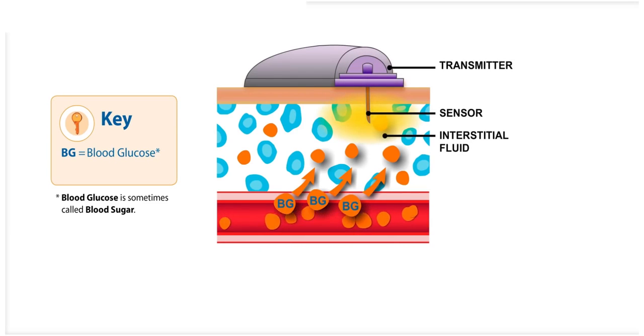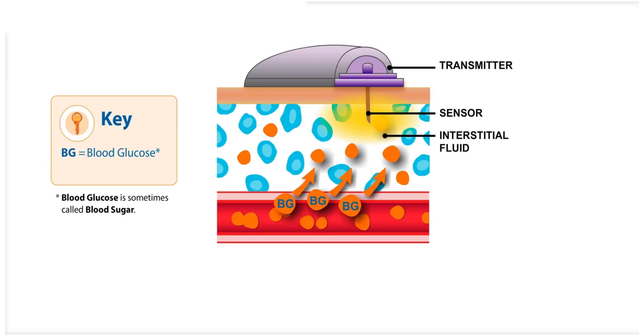When you wear the sensor, it measures the level of glucose in the interstitial fluid, that is, the fluid that surrounds the cells. We refer to this type of glucose reading as sensor glucose, or SG.